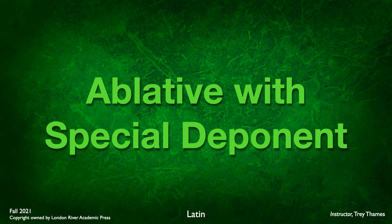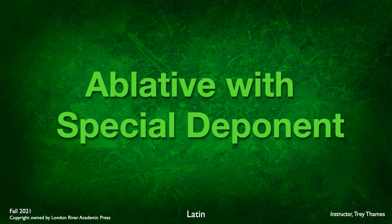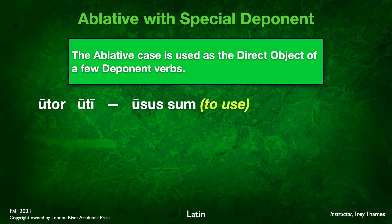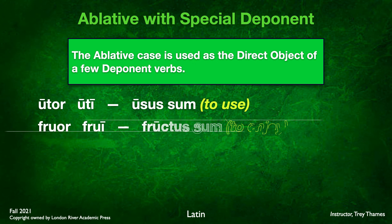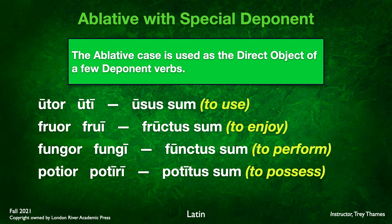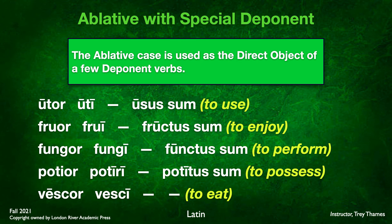Finally, ablative with special deponents. This is one of many uses of the ablative we've studied thus far. The ablative case is used as the direct object with a few deponent verbs. Here are a few of them: utor, uti, usus sum — to use, from which we get utility. Fruor, frui, fructus sum — to enjoy. Fungor, fungi, functus sum — to perform. Potior, potiri, potitus sum — to possess. And vescor, vesci — to eat. These are all special deponents that require the ablative as their direct object.